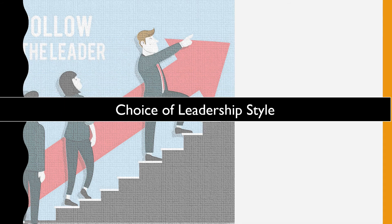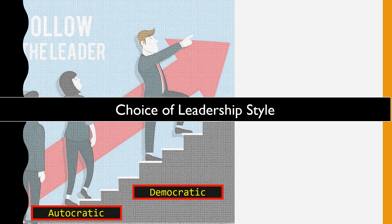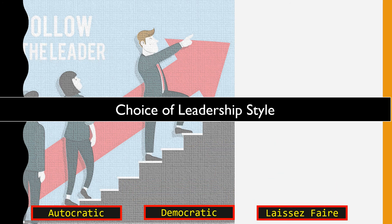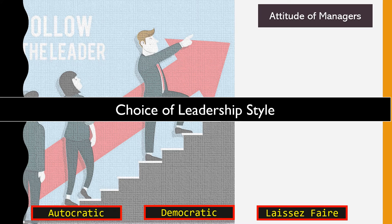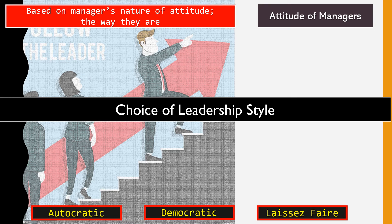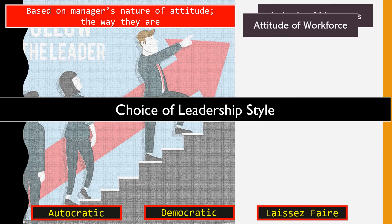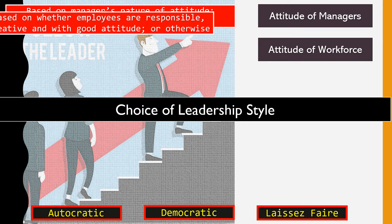Let's check your answers. The first factor is the attitude of managers — based on the manager's nature, a strict manager who wants things done with little discussion may lean towards an autocratic style rather than a democratic one. The second factor is the attitude of the workforce — employees who are responsible, creative, and have a good attitude, such as Theory Y workers, would be better led with a democratic or laissez-faire style rather than autocratic.